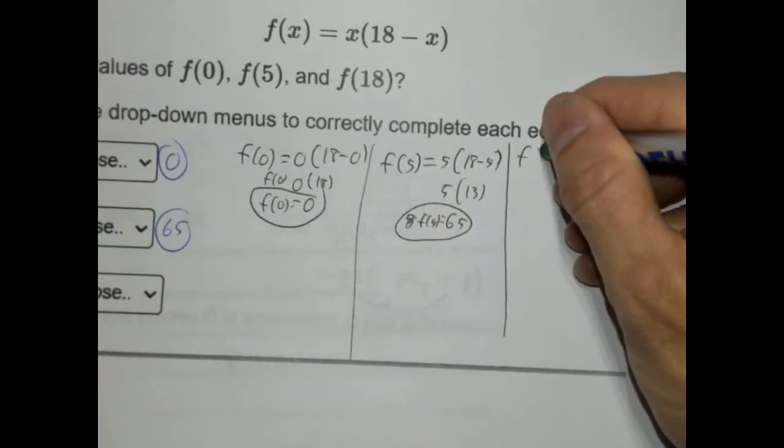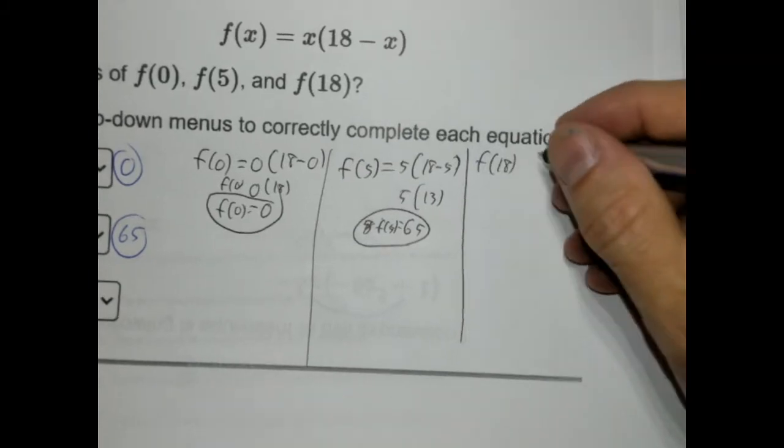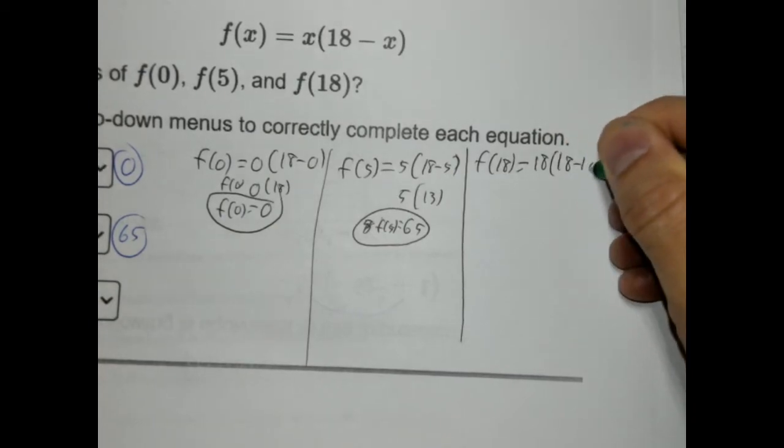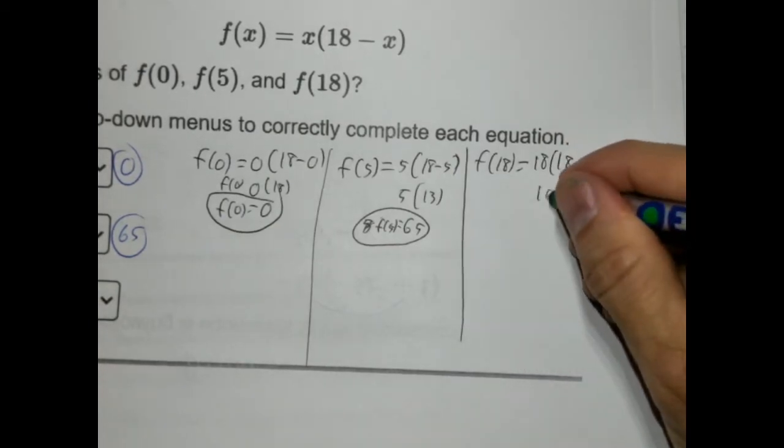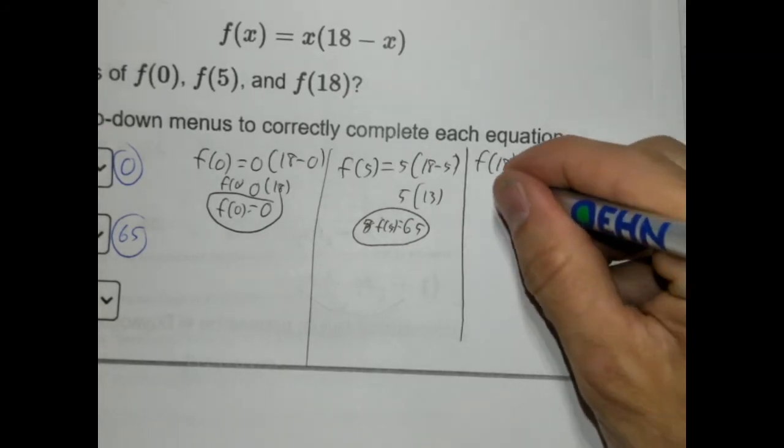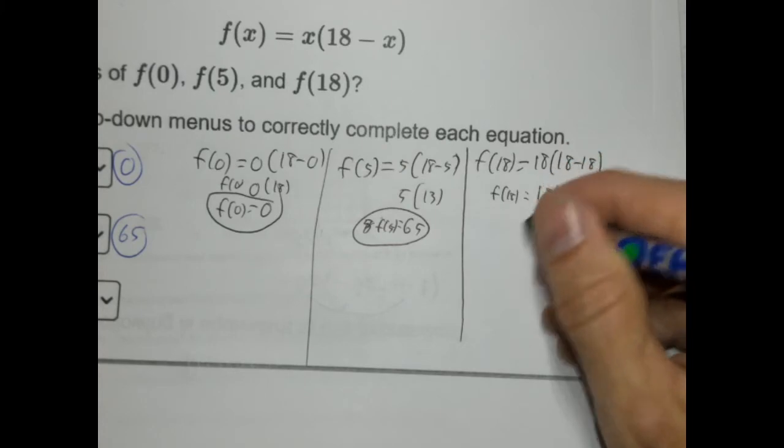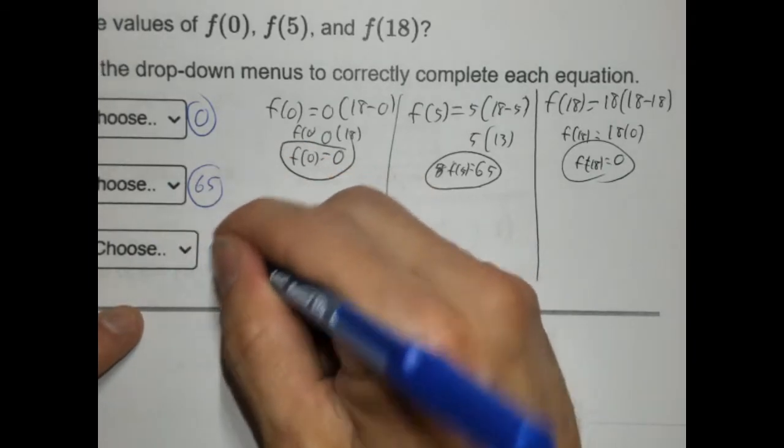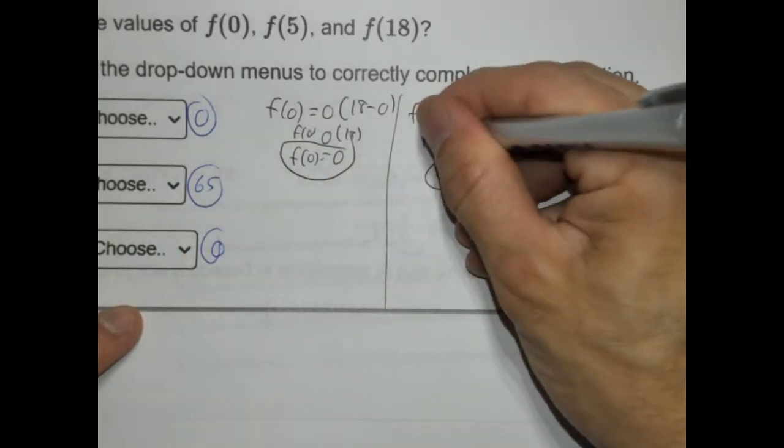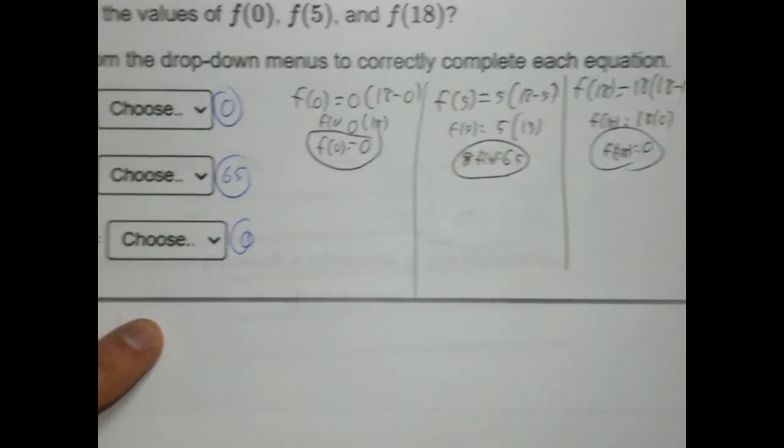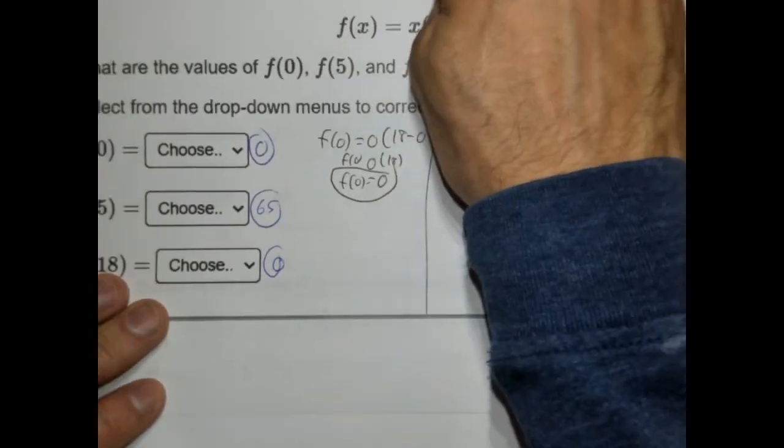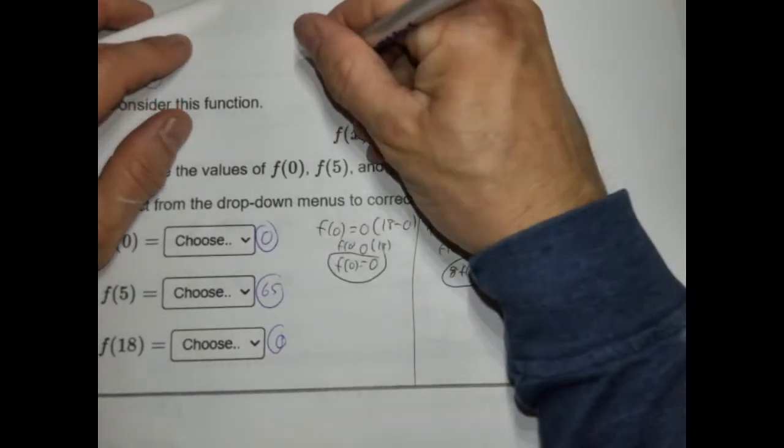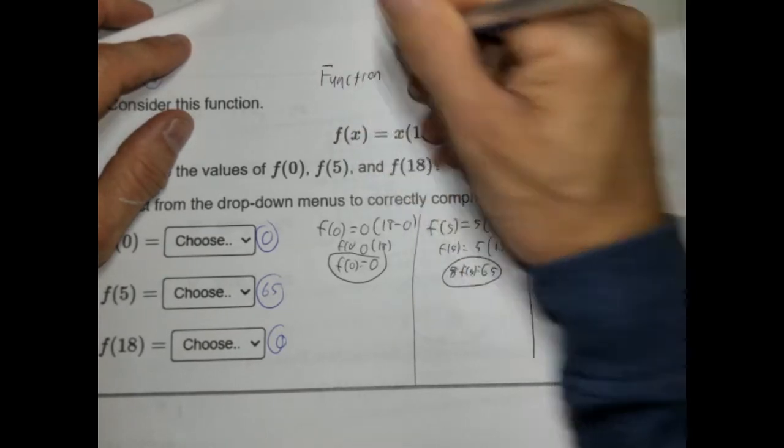And the last one, f(18). 18 is going to go with the x's. So 18 goes here. And then 18 minus 18. So 18 take away 18 is 0. So 18 times 0. 18 times 0 is 0. So f(18) is 0. So 0 would go there. We have 0, 65, and 0. So this is really just, hey, do you know how to use function notation? Yes or no. That's pretty straightforward.